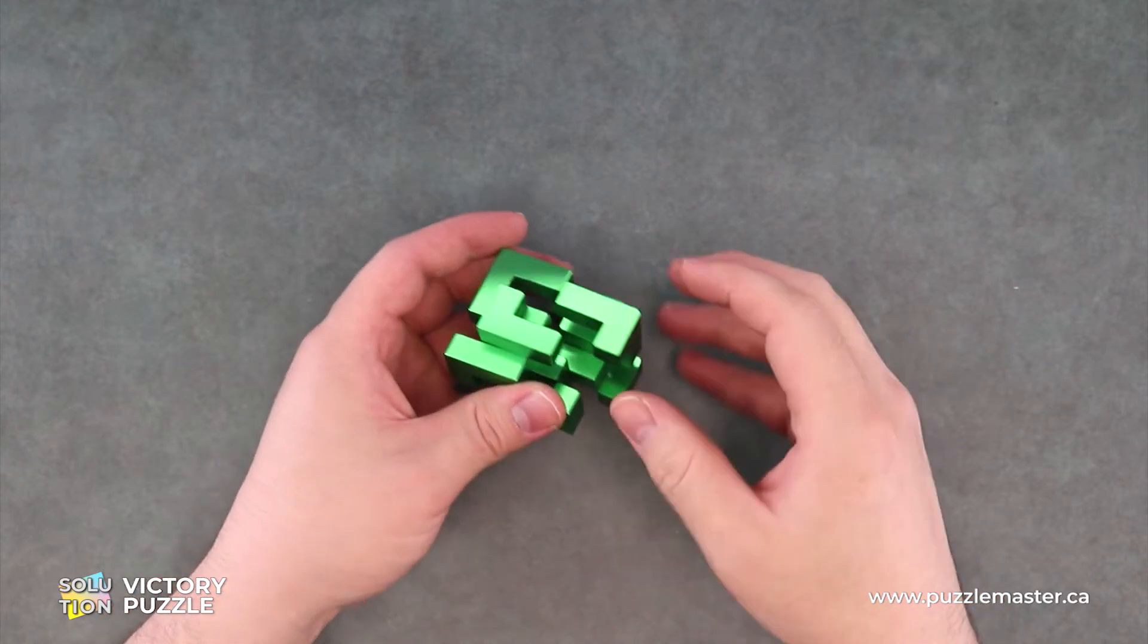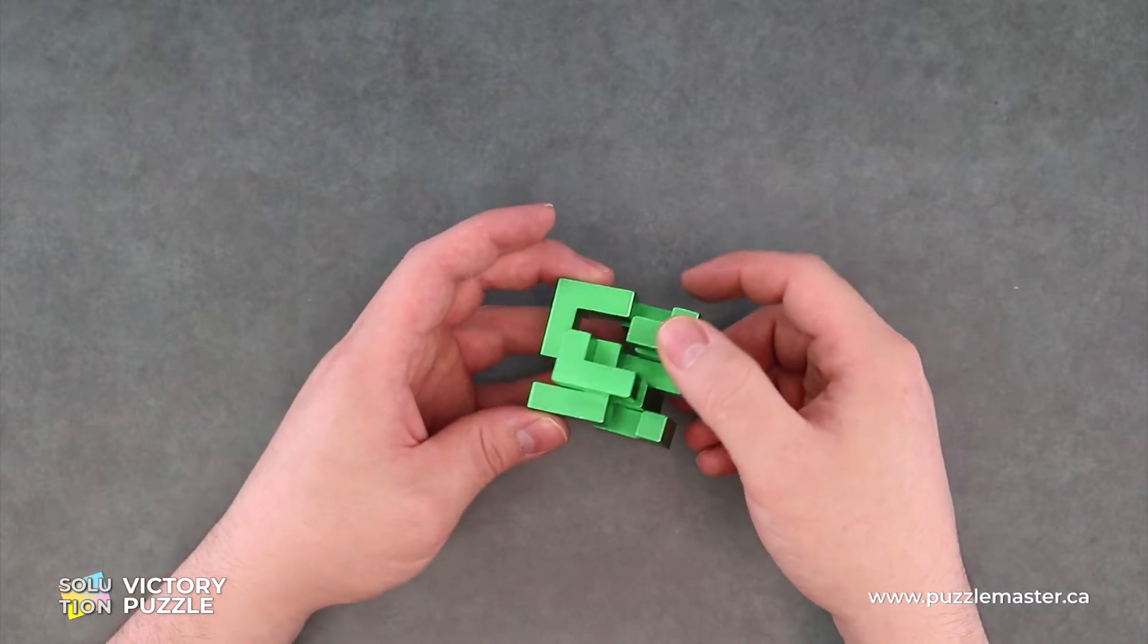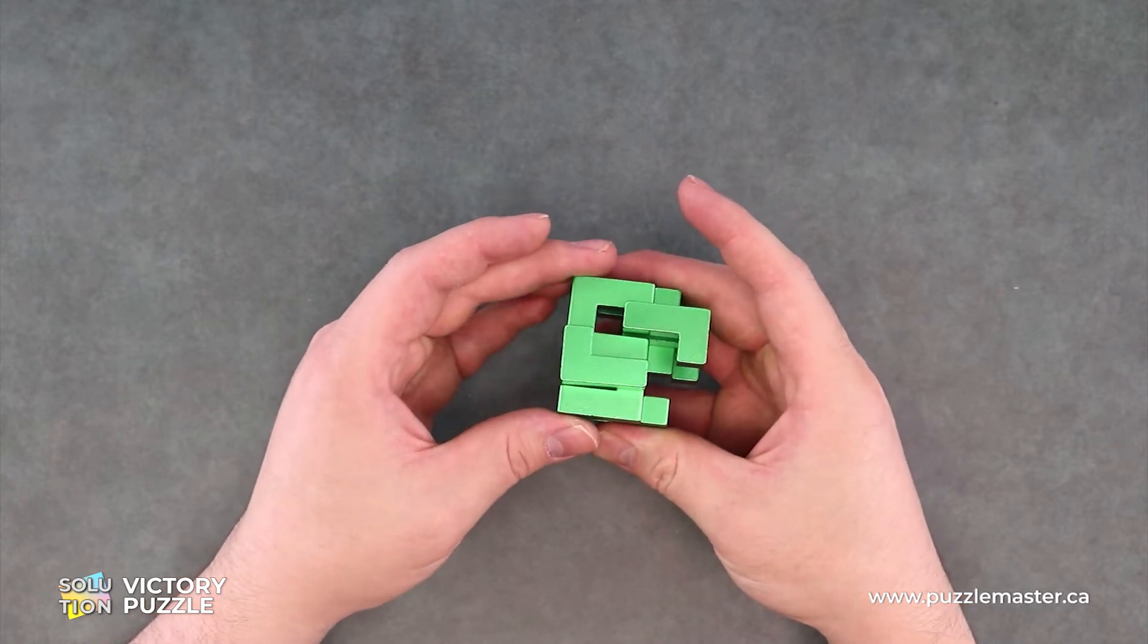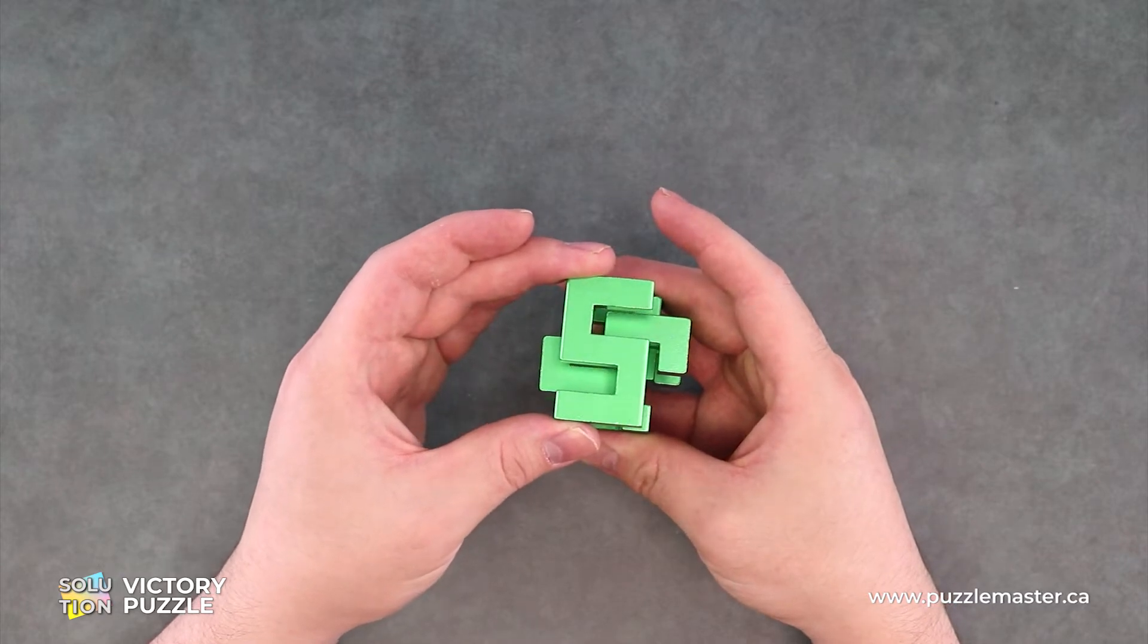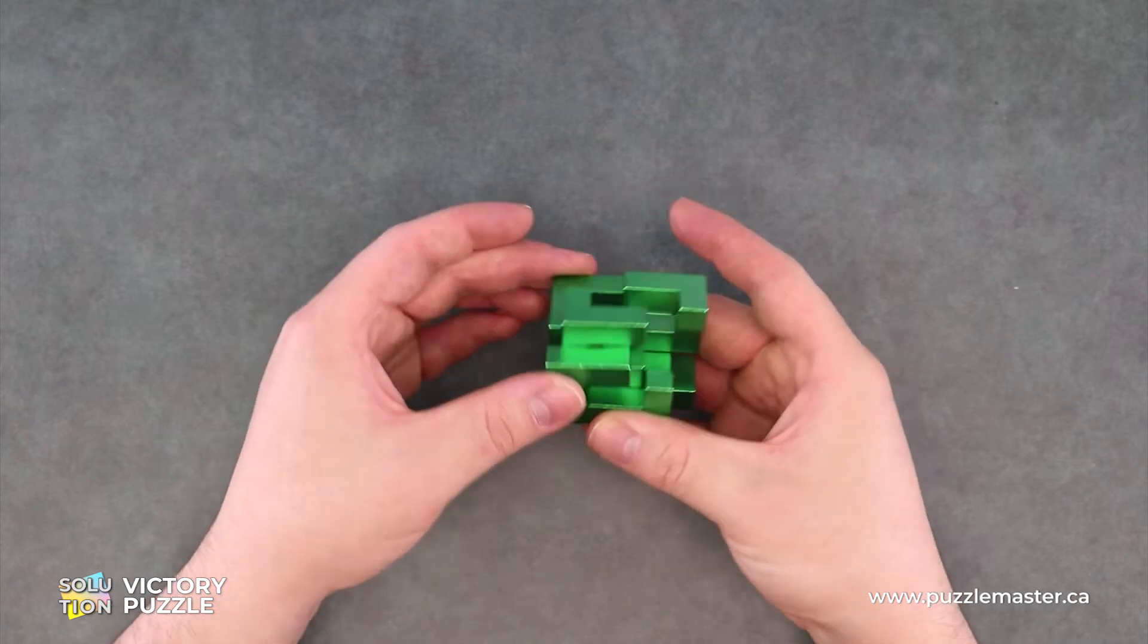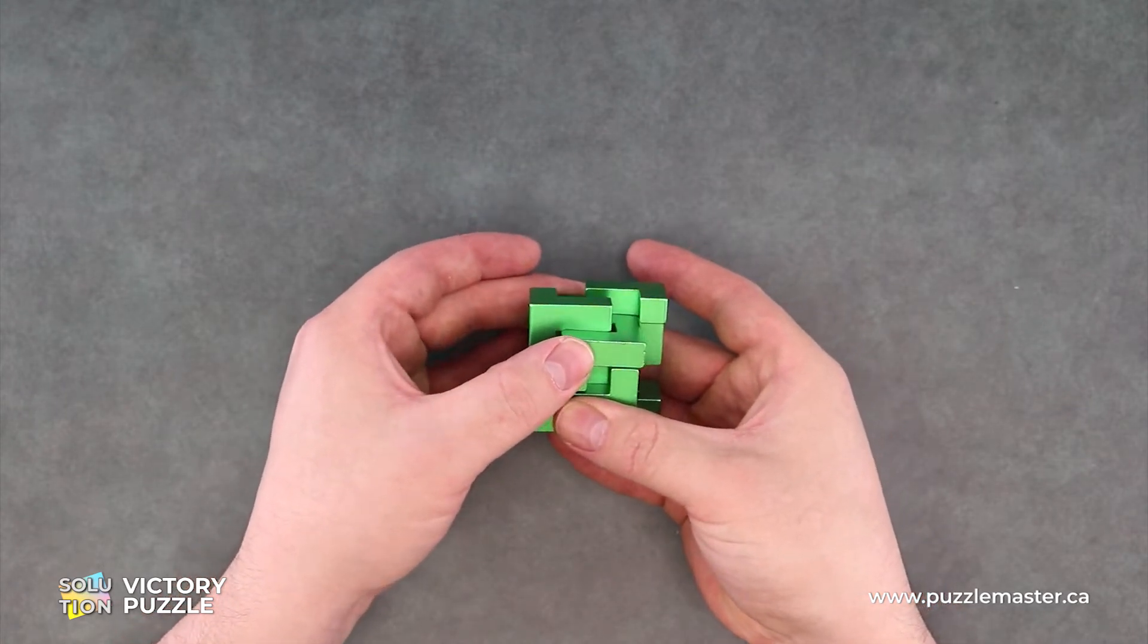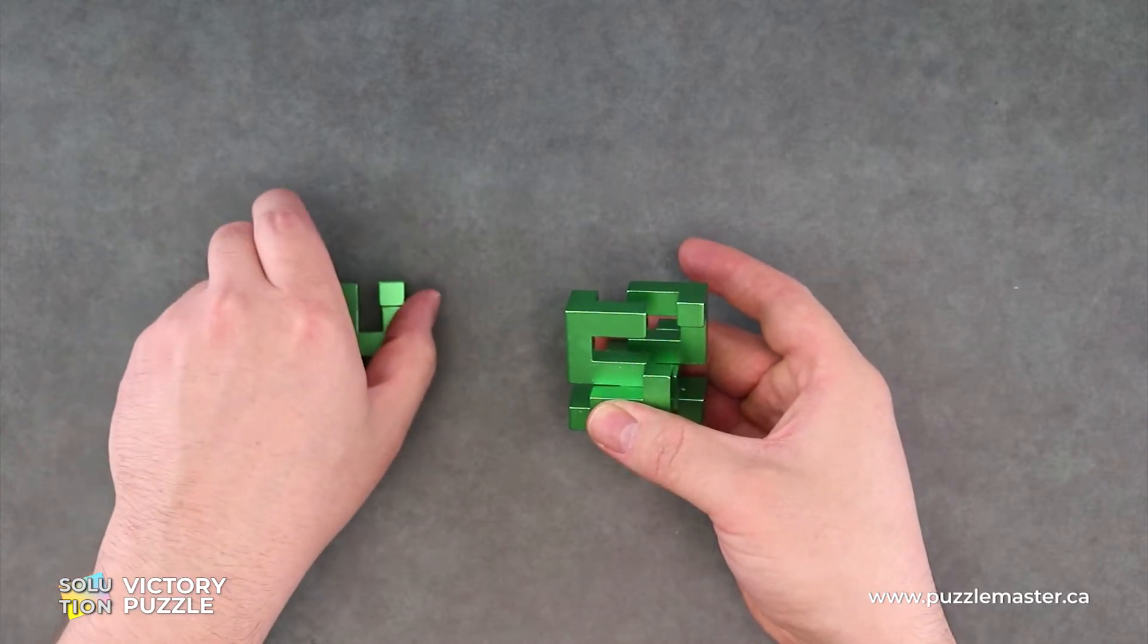So we're going to look for this side here, and this furthest piece down, we are going to slide up and out. We'll take a look at that from the side. Up and out. That's our first piece done.